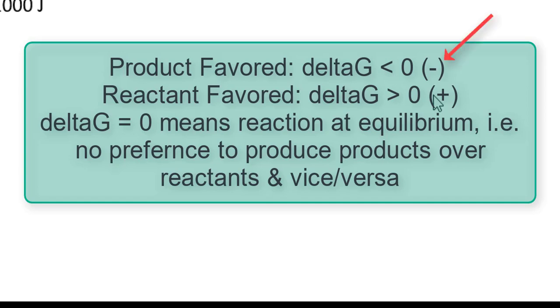Unlike delta S universe, a positive delta S universe is associated with a product-favored reaction. A positive delta G, on the other hand, is associated with a reactant-favored reaction. And a negative delta S universe is associated with a reactant-favored reaction.